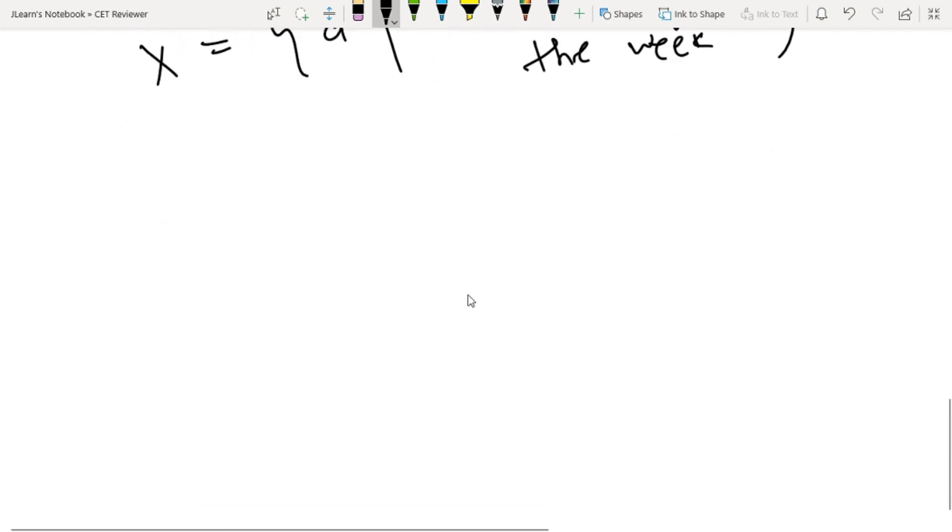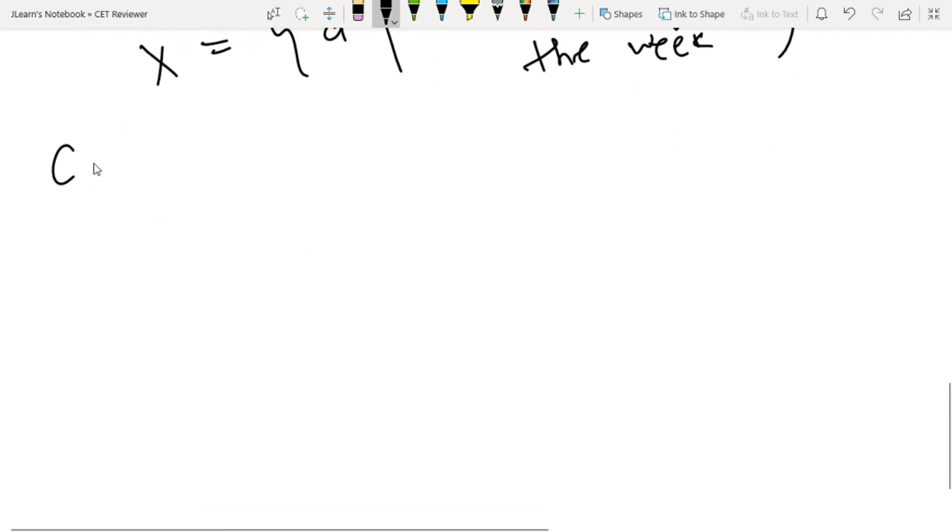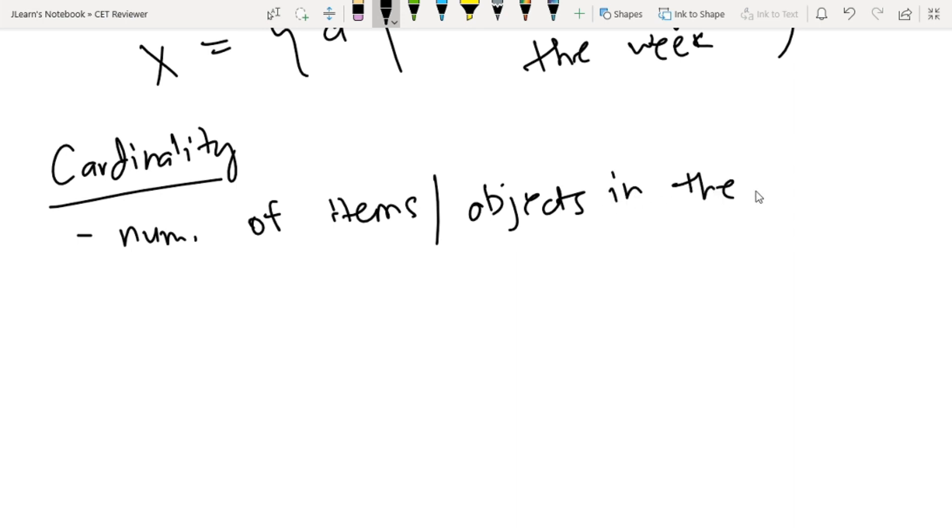Next we need to discuss cardinality. What is cardinality? Cardinality is basically the number of items or objects in the set. The rule here is any repeated element is only counted once.